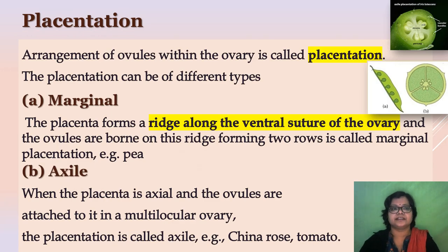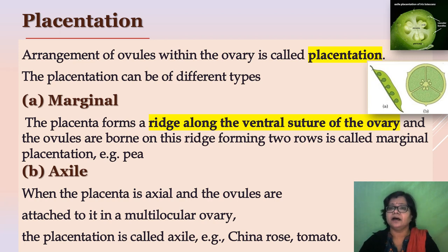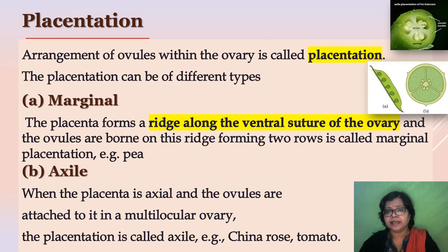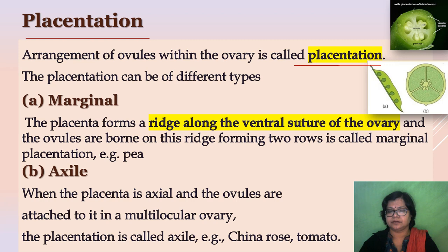Now let's discuss placentation. First, we need to know what is a placenta. Placenta is the flat cushion-like tissue which attaches ovules to the ovary. The ovules may be many, and the arrangement of ovules within the ovary varies. The arrangement of ovules within the ovary is called placentation. On the basis of arrangement, placentation is mainly of five types.